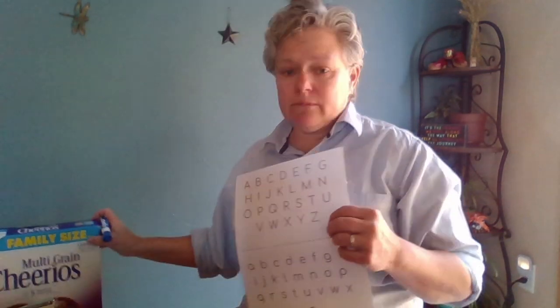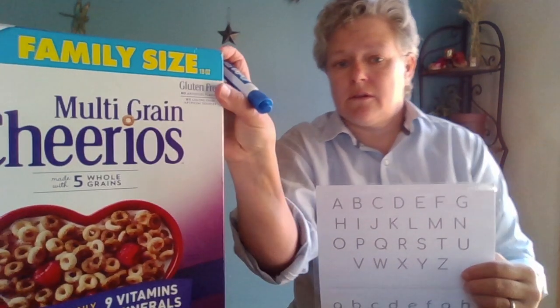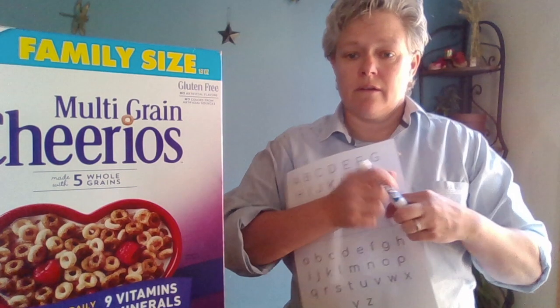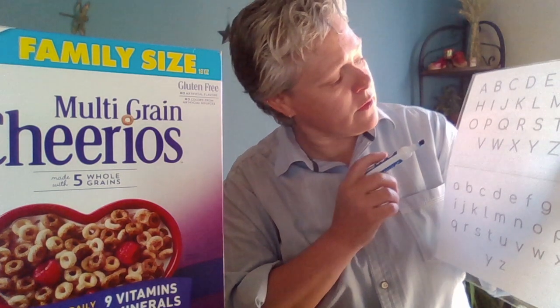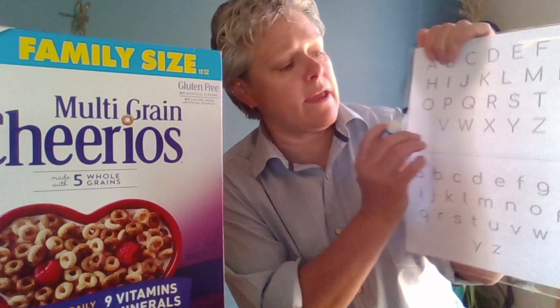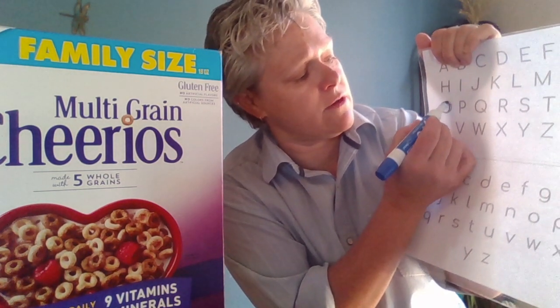Okay, ready? Let's start with Cheerios. There are lots of letters in here. I know that one — did you say O? It is an O. I have to look for an O. And I am going to trace the O like that. It's at the very beginning here. It's a C. I'm going to trace the C.